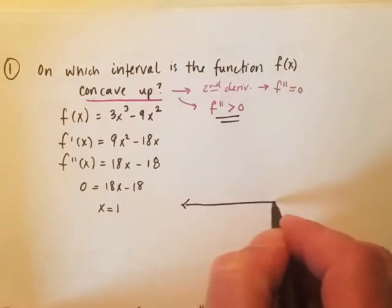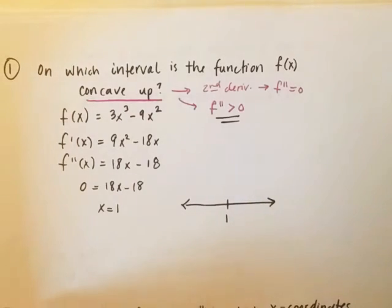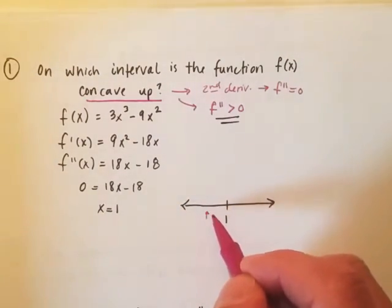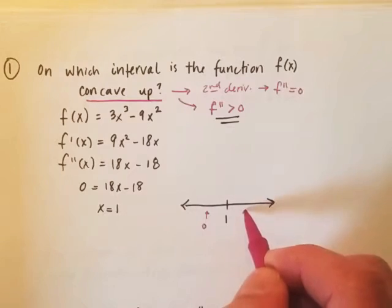This is where we would set up a number line. And we would actually test on either side of that number line. So some numbers that we could potentially plug in would be, let's see, what's less than one? Zero. And what's greater than one? Two.